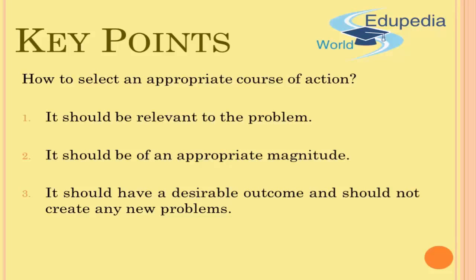The third criterion is that the solution should have a desirable outcome and not create new problems. For example, the government sees that income tax revenue was very low, so they decide to increase the rate of income tax. While tax collected per person might increase, there is a high likelihood people will find ways to evade tax. A better solution might be offering tax incentives — giving rebates to reward people for declaring all taxes, which encourages more people to file and reduces motivation to evade.